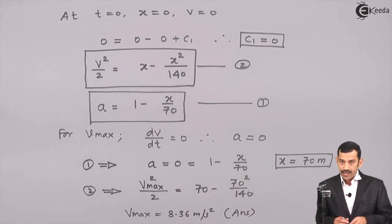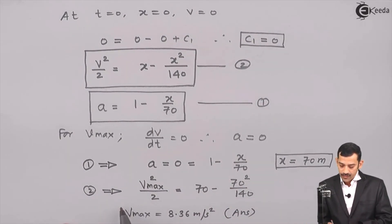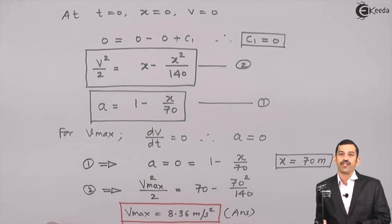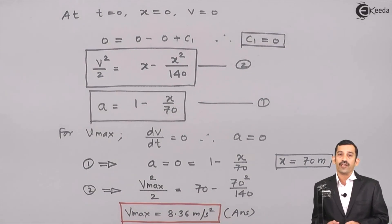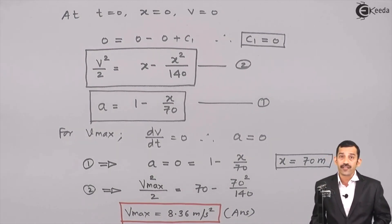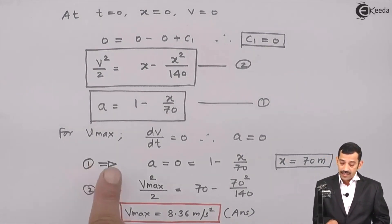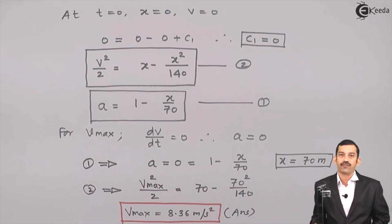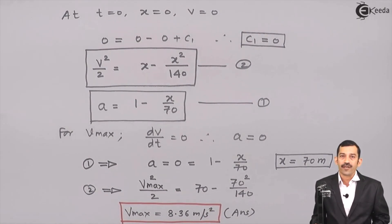To summarize: to find maximum velocity, we use the condition that for anything to be maximum, its differentiation with respect to the variable must be 0. So for v to be maximum, dv/dt = acceleration = 0. Equating acceleration to 0 gives the position, and substituting that position into the velocity equation gives the maximum velocity.